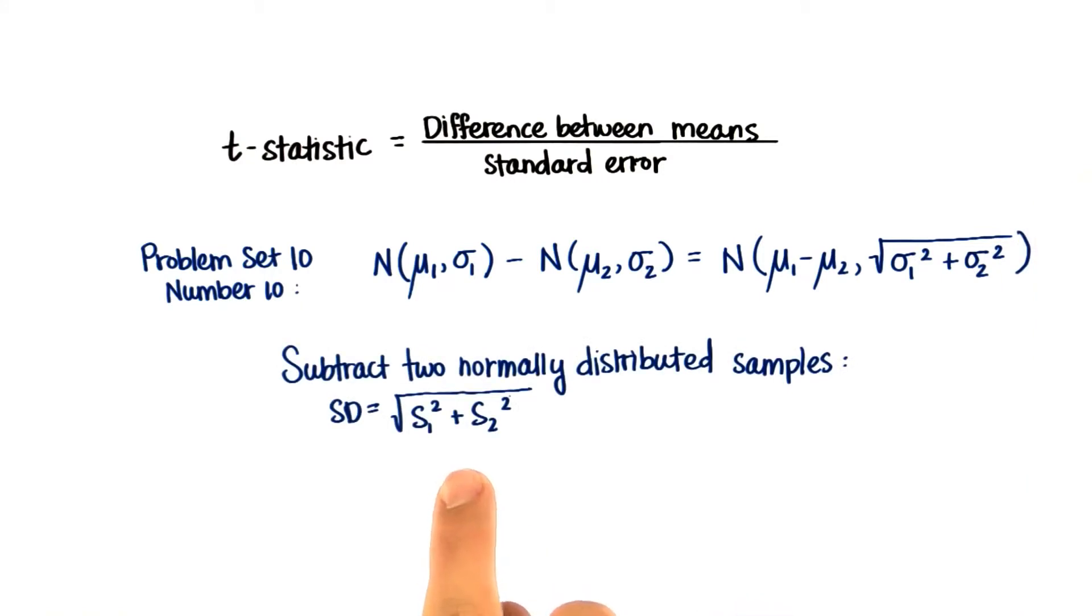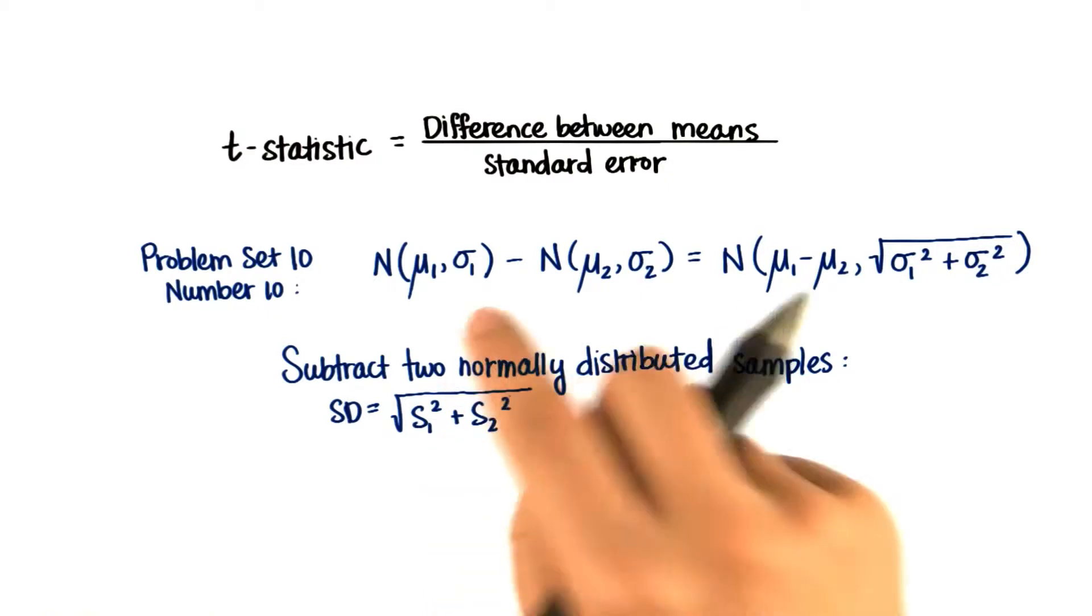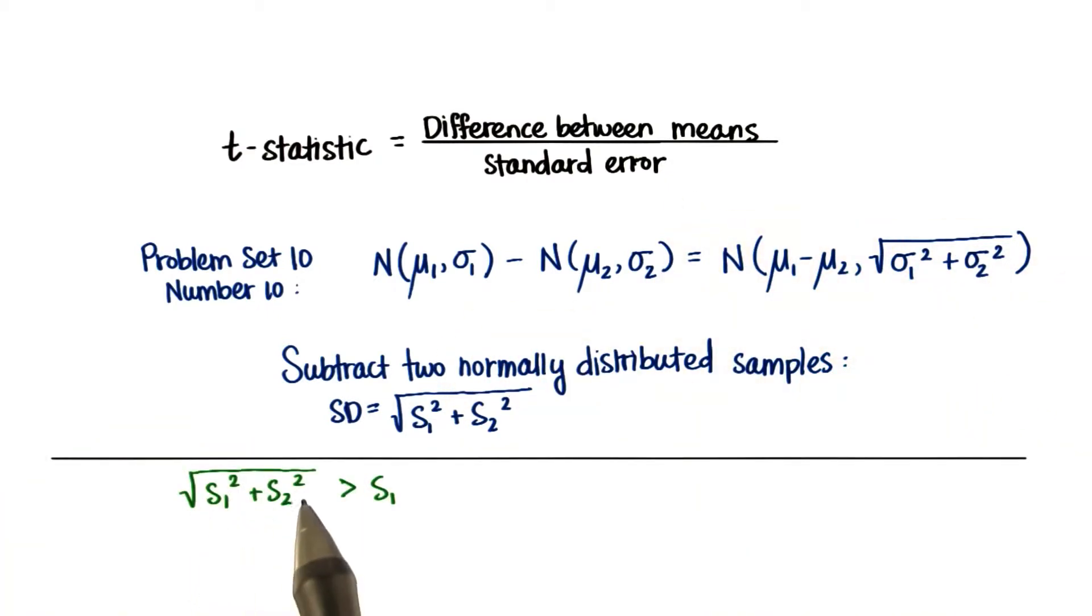For samples, it's roughly the same. The standard deviation of this new data set is even bigger than that for each individual data set. So we know that this standard deviation of the combined data sets is greater than the standard deviation of just one of the samples.